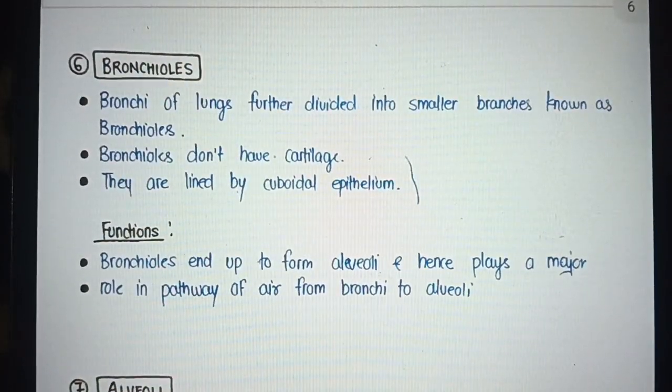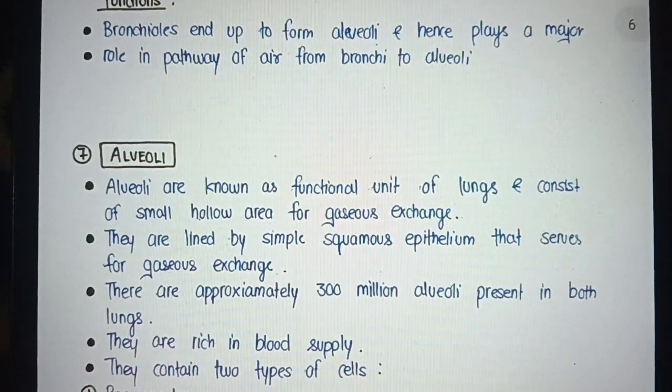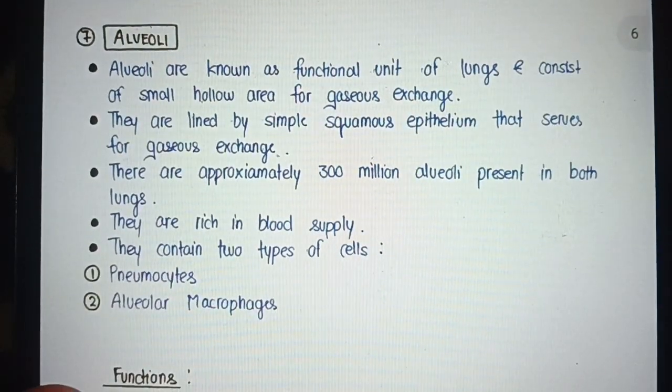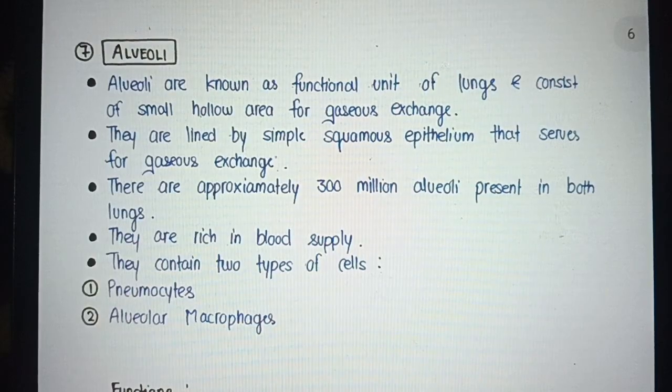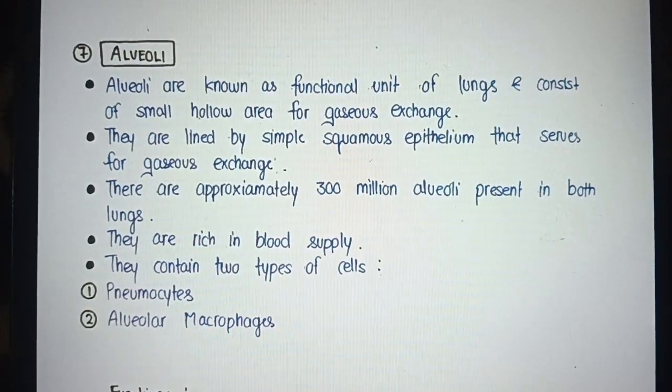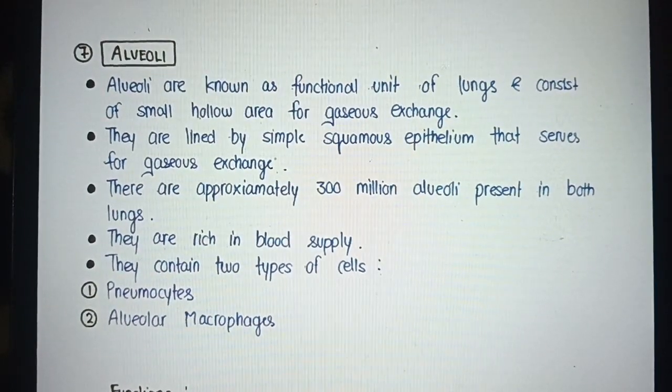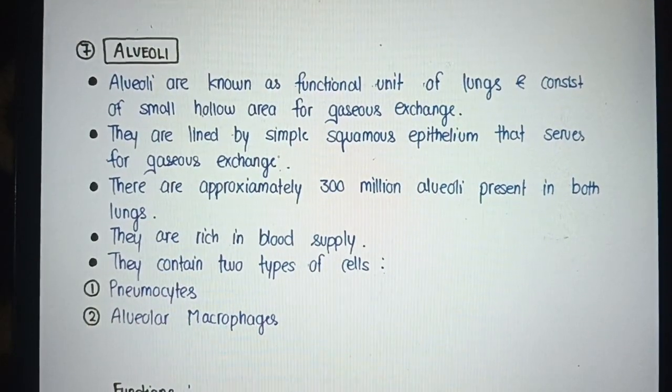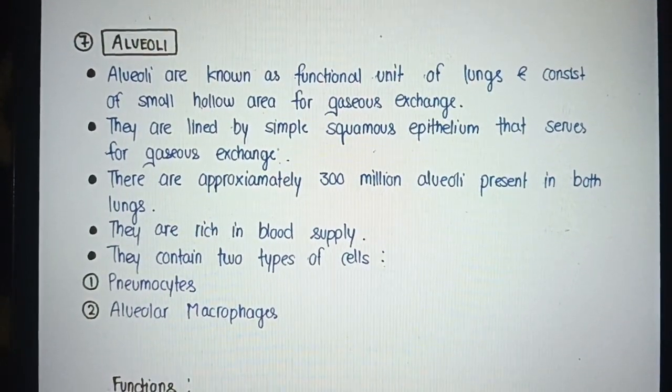Bronchioles. The bronchi of the lungs further divide into smaller branches known as bronchioles. Bronchioles don't have cartilage and are lined by cuboidal epithelium. Functions: Bronchioles end up to form alveoli, hence they play a major role in the pathway of oxygen to the tissue.